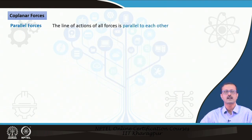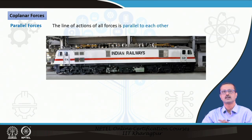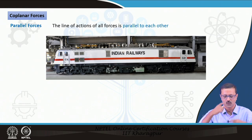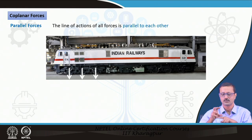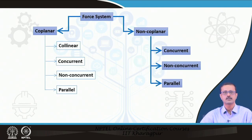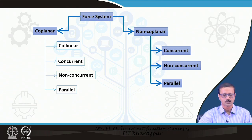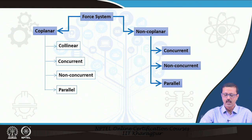The last coplanar type is parallel forces — which are non-concurrent and go parallel to each other. An example is a railway engine or coach: the wheels transmit the load to the rail through the perpendicular radius, producing parallel forces at each wheel contact point. Now for non-coplanar forces, we again have concurrent, non-concurrent, and parallel types.